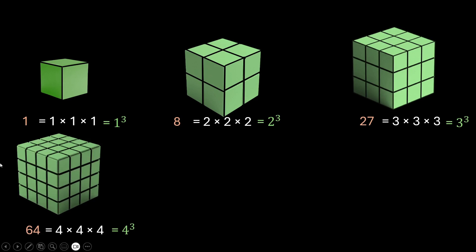All of these numbers 1, 8, 27, 64, these are called perfect cubes. So perfect cubes are those numbers which can be written as a number raised to the power 3.